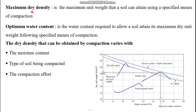When talking about compaction, two key terms are commonly used in laboratory compaction tests such as the Standard Proctor and Modified Proctor tests. Maximum dry density is the maximum unit weight achievable by a specified means of compaction. The moisture content corresponding to this maximum dry density is known as the optimum water content.